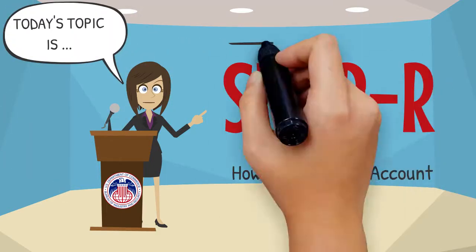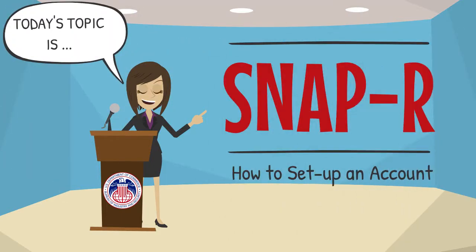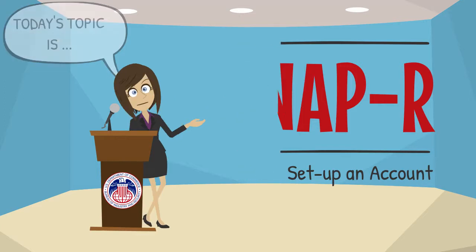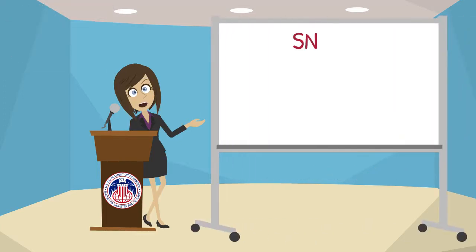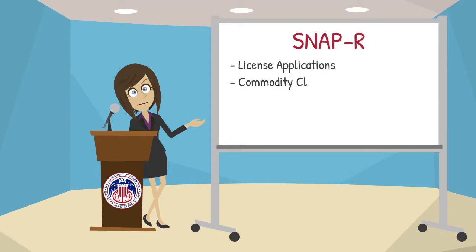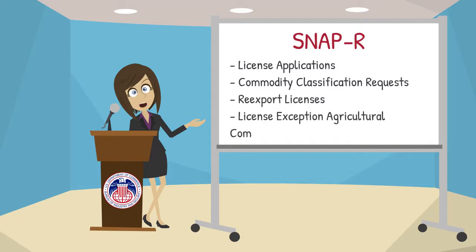Today's topic is SNAP-R and how to set up an account. SNAP-R is the Bureau of Industry and Security's secure web portal for exporters to submit export license applications, commodity classification requests, re-export licenses, and the notification requirement under license exception agricultural commodities. In this video, I will provide you with step-by-step instructions on how to register for a SNAP-R account.